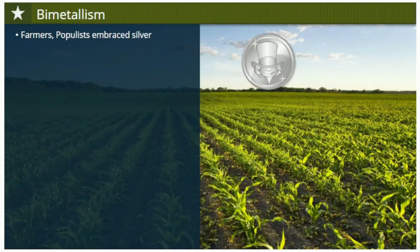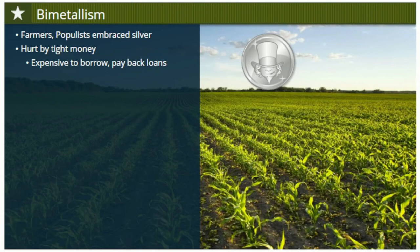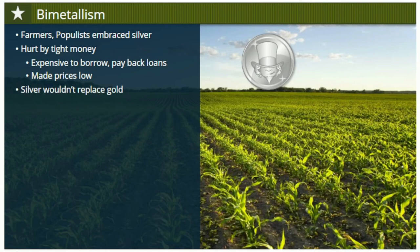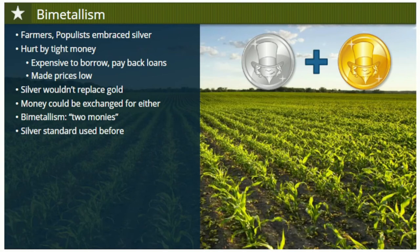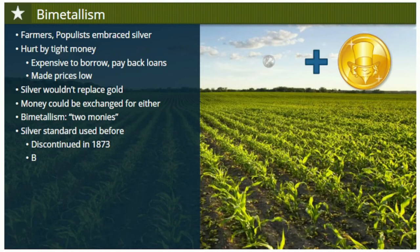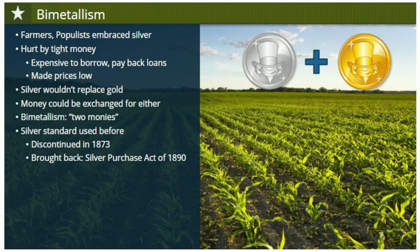Farmers and populists enthusiastically embraced the idea of a silver standard. They had been especially hurt by the tight money supply, which made it more expensive to borrow money or pay back loans. Many farmers were heavily in debt, and having less currency also kept prices low, which hurt farmers who wanted to sell their products for higher prices. People who desired a silver standard didn't want to do away with the gold standard — they wanted both, known as bimetallism. The U.S. had used a silver standard earlier in its history, but it was discontinued in 1873. Then a Silver Purchase Act of 1890 required the government to purchase silver each year, prices rose somewhat as more money was printed, and farmers came to associate better times with the silver standard.